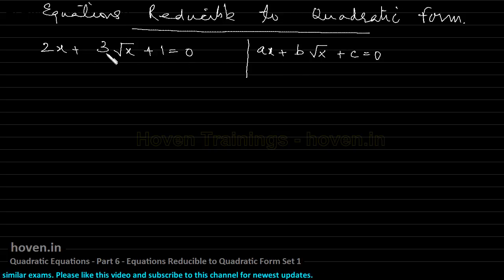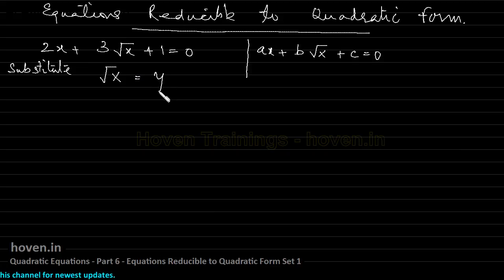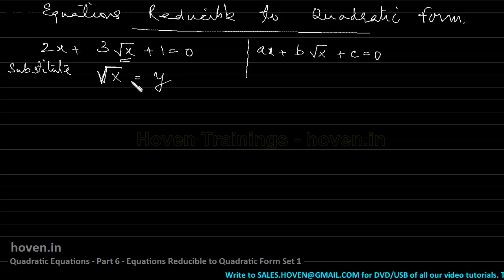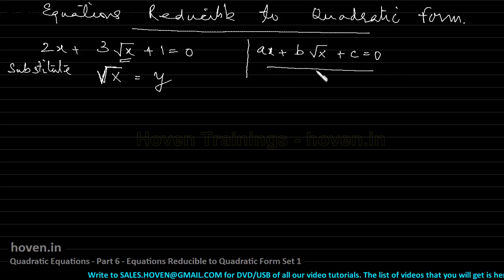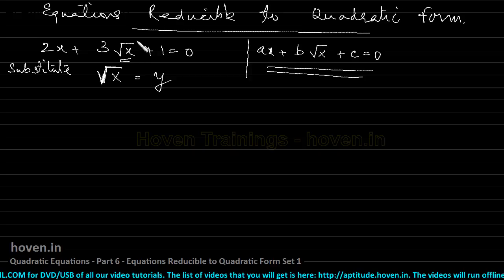If you meet such types of equations, then the trick is to perform a substitution: substitute √x = y. Why have we chosen √x? Because this is the only unusual term here, which is in a very different form. So in this particular case we choose to write √x = y. You should remember that this trick doesn't work always — it works only when the form is like this. By doing this I will be able to get rid of the √x term.